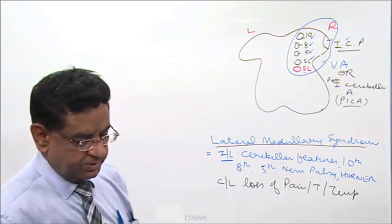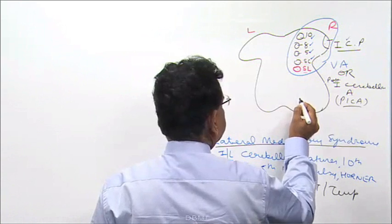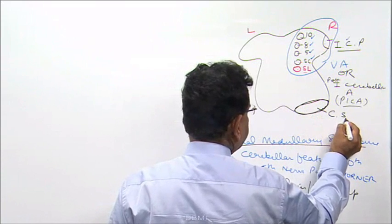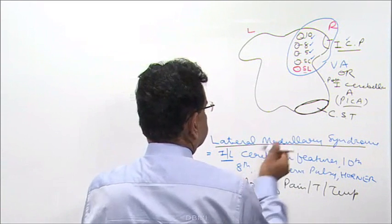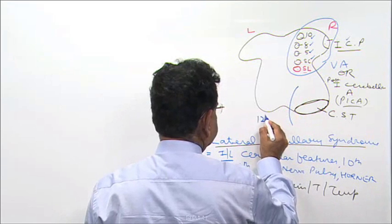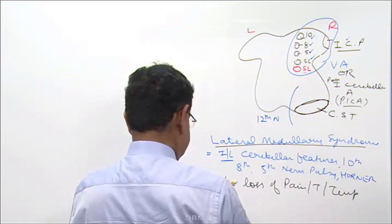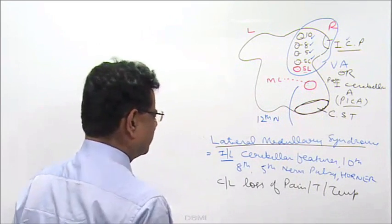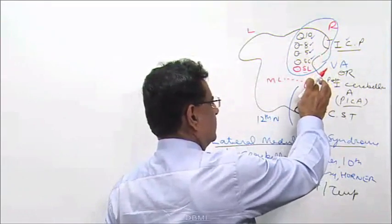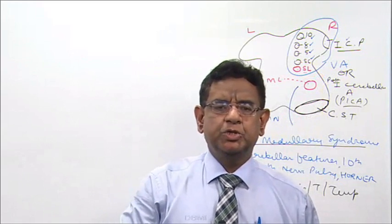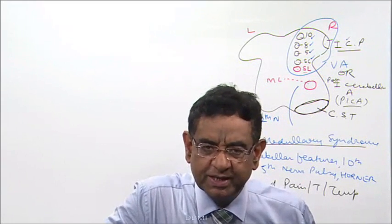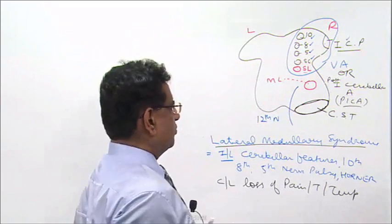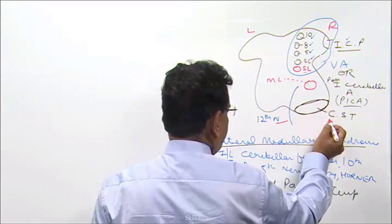Now we move further. Here is the corticospinal tract, here is the twelfth nerve, and here is the medial lemniscus. This is the right-sided medial lemniscus — it contains left-sided position and vibration sense fibers, which we covered just a couple of minutes ago.